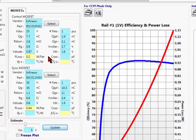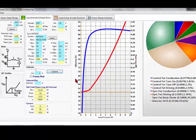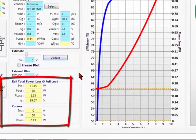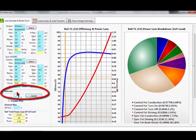The total power loss section shows the estimated loss along with the efficiency for the rail at maximum output load current and selected input voltage.